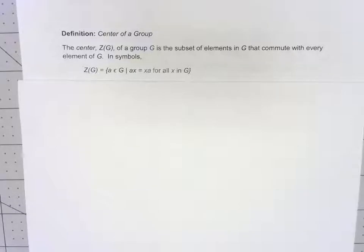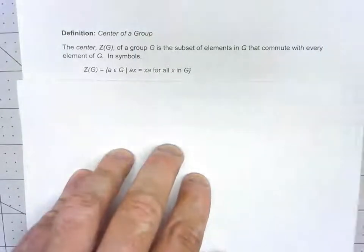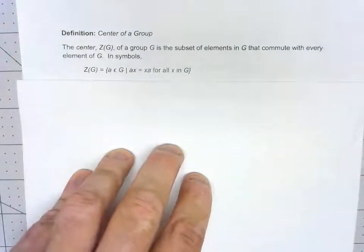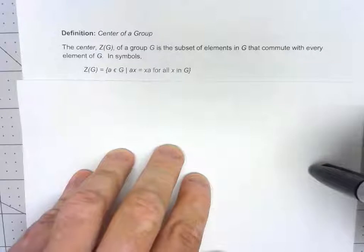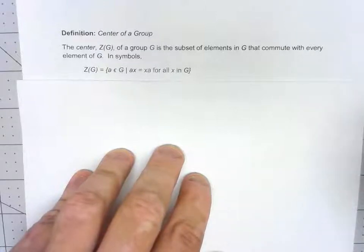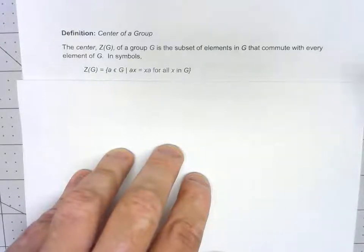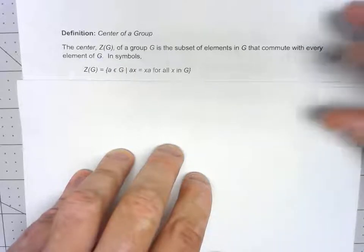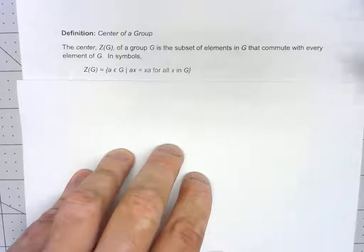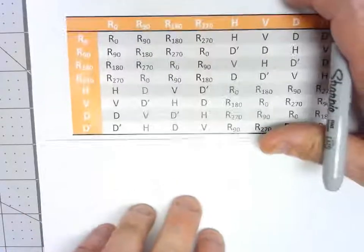There are just a couple more definitions we want to take a look at. The first one is called the center of a group. The center of the group is defined as all the elements that commute with everything in G. We call it Z of G — that's a tradition; it comes from a German word. If G is an abelian group, if the operation is commutative, then the center of the group is the entire group. That's interesting, but not really all that useful. So let's actually look at our biggest example of a non-abelian group, which is of course our D4.